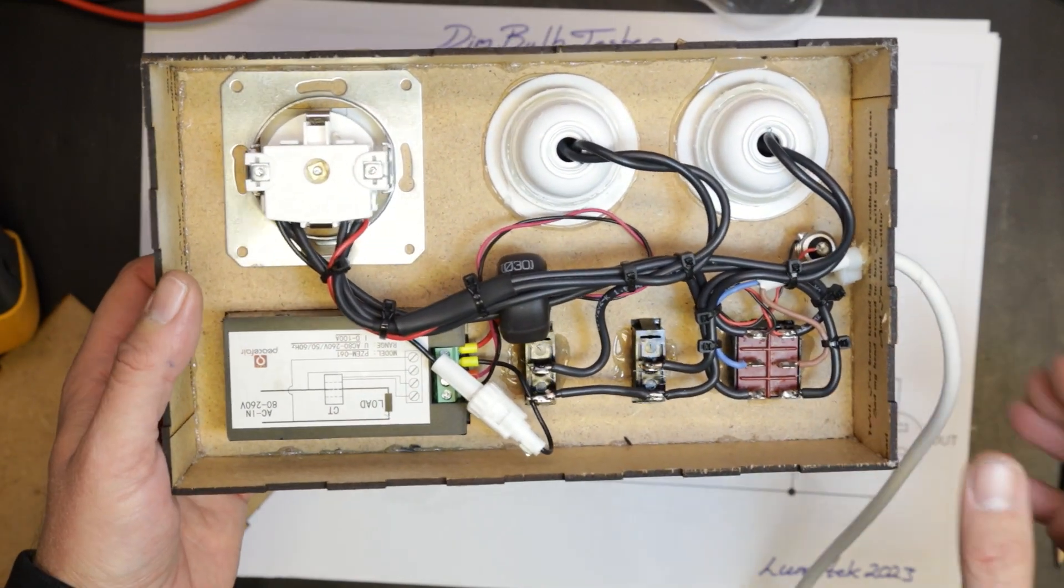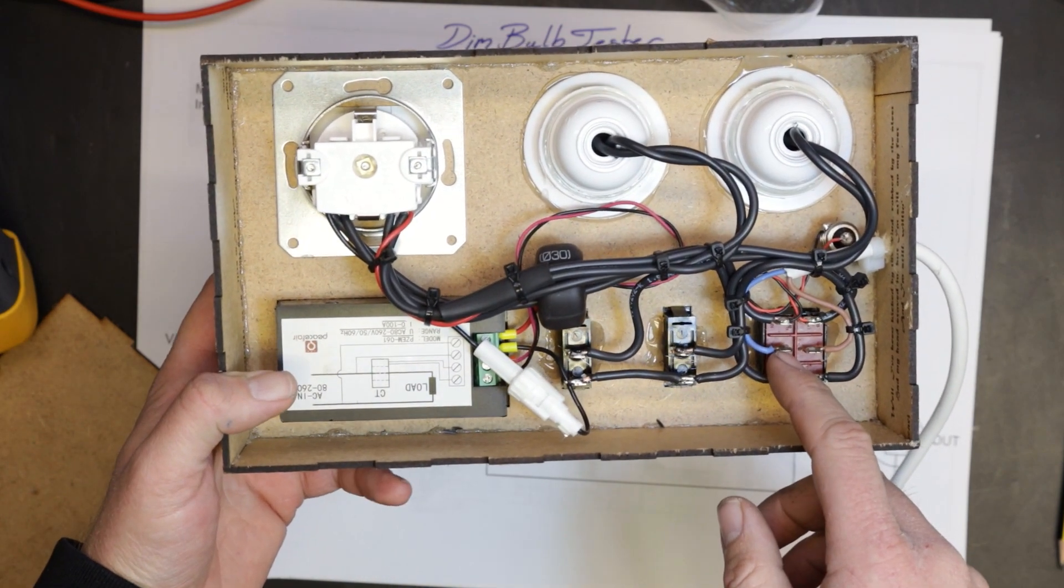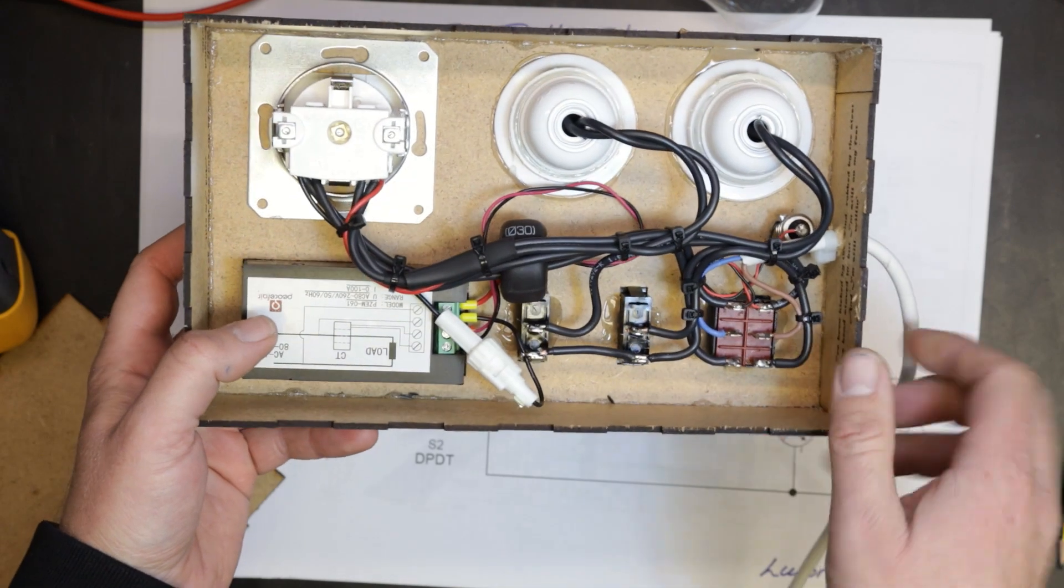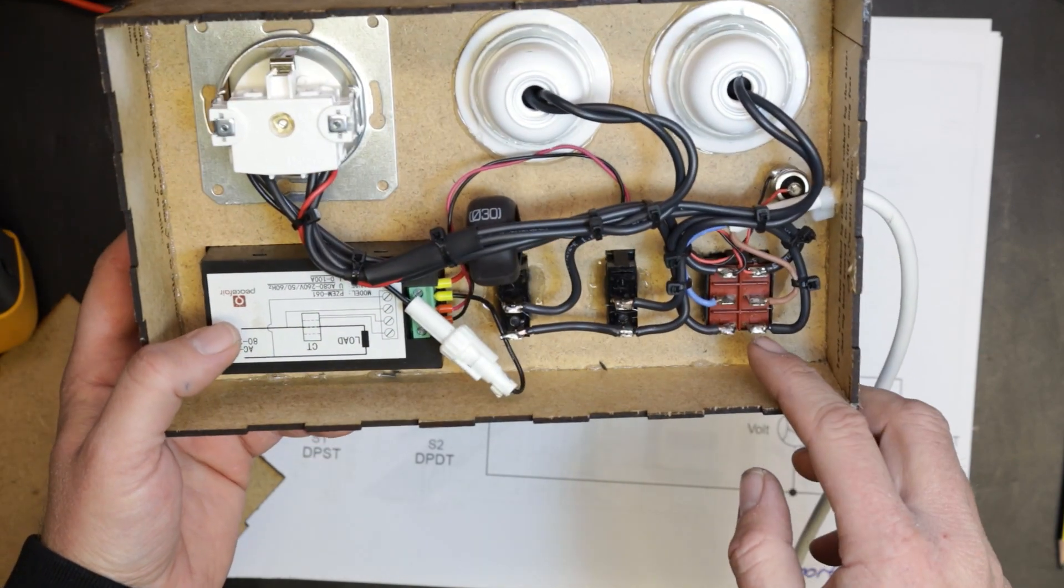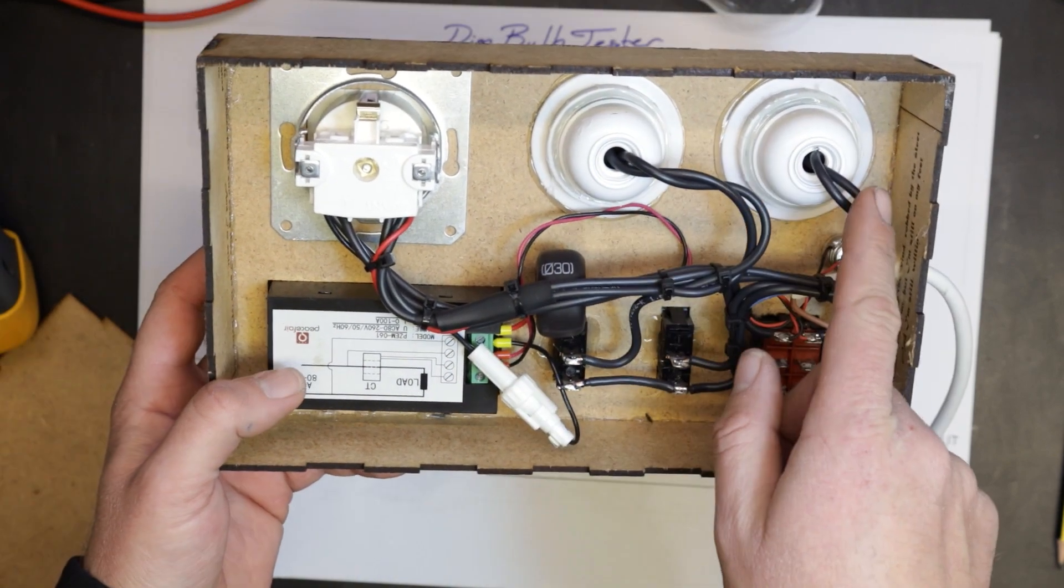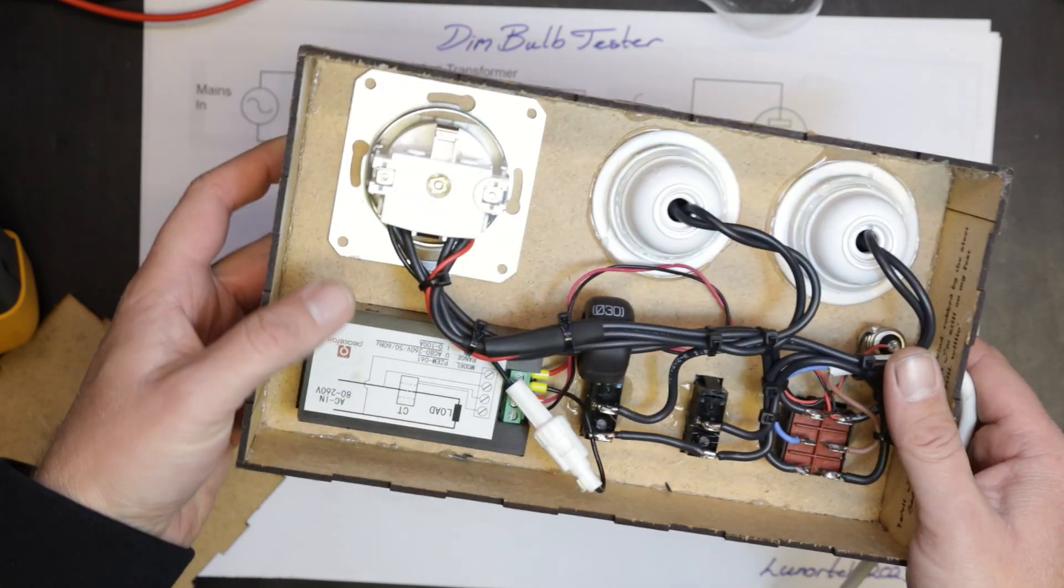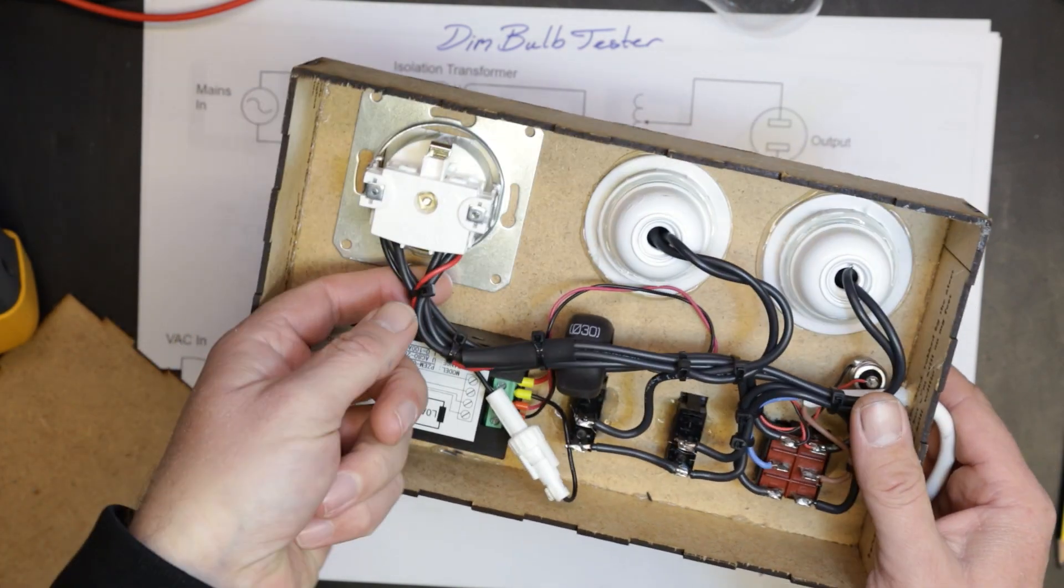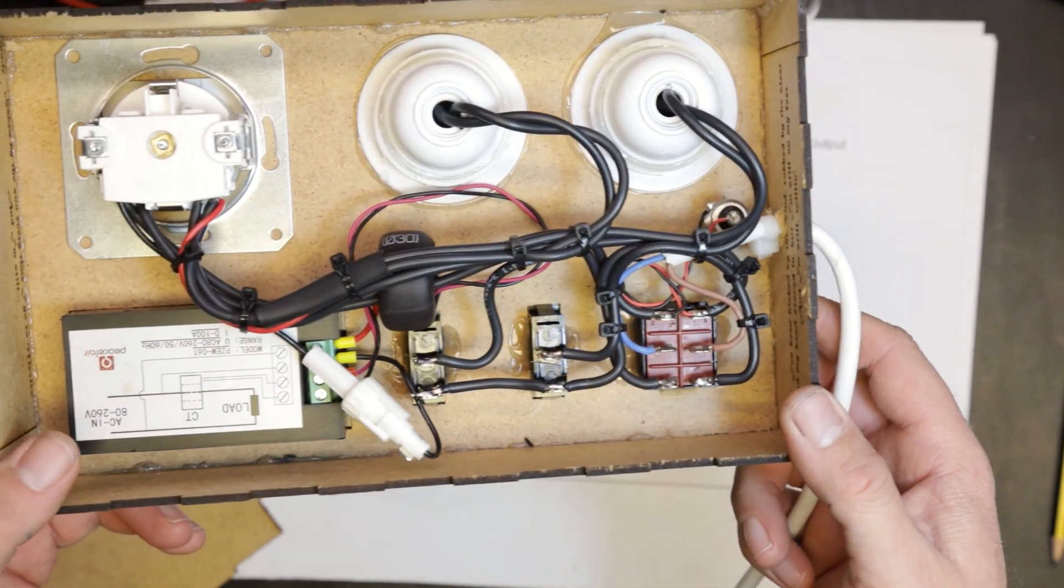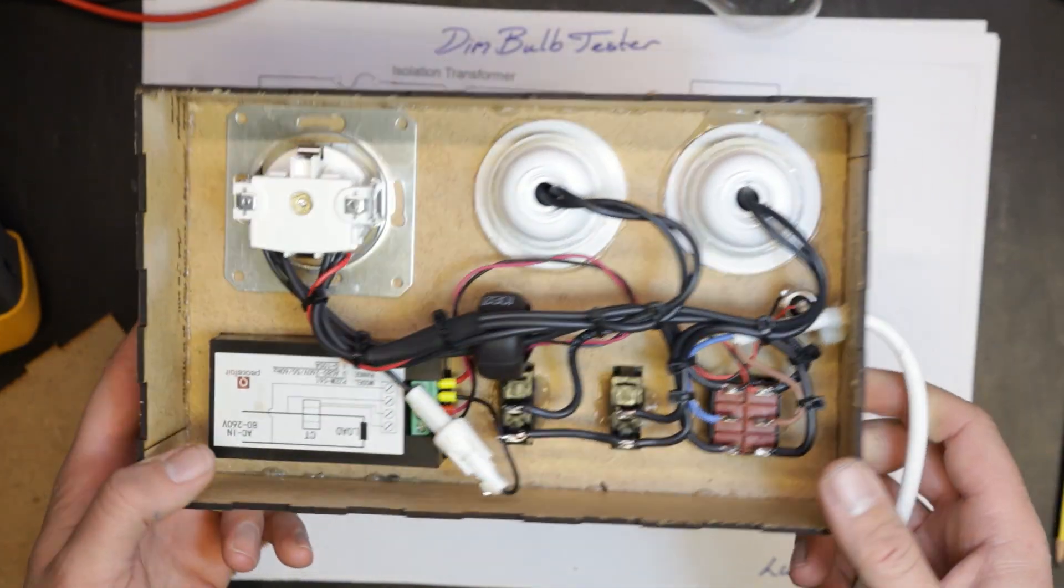So here's inside the dim bulb tester. It's simply wired up point-to-point, and I have soldered all the connectors except for inside the bulb sockets and my output socket. So yeah, it's not much to it, but it can save your equipment.